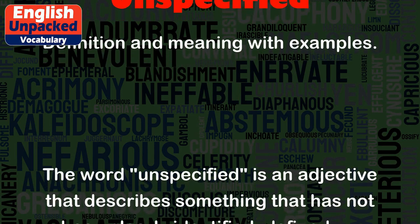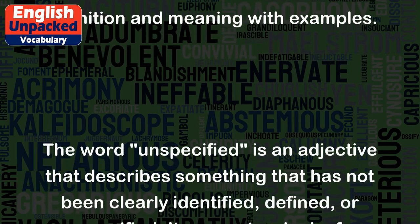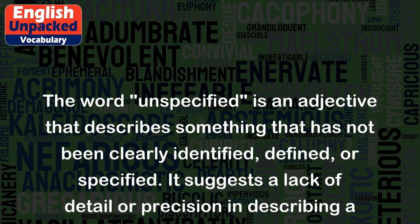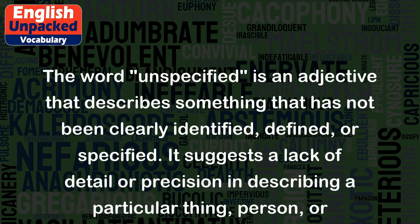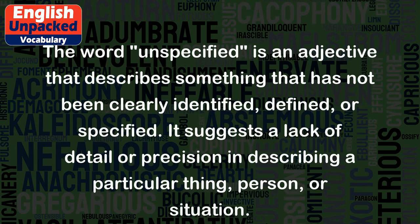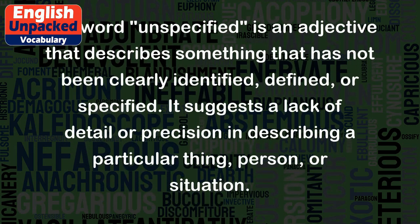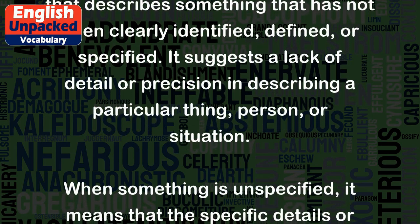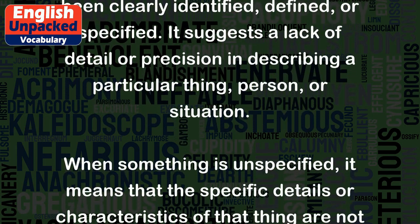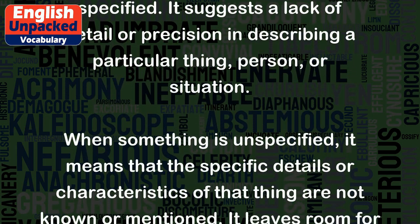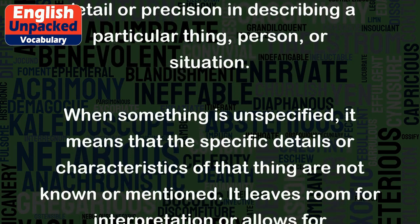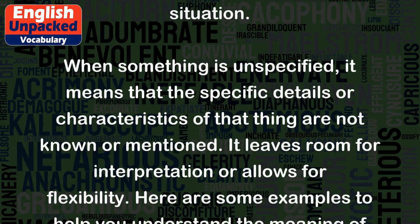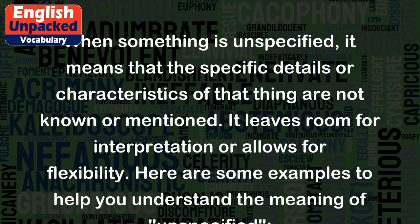The word 'unspecified' is an adjective that describes something that has not been clearly identified, defined, or specified. It suggests a lack of detail or precision in describing a particular thing, person, or situation. When something is unspecified, it means that the specific details or characteristics of that thing are not known or mentioned. It leaves room for interpretation or allows for flexibility.